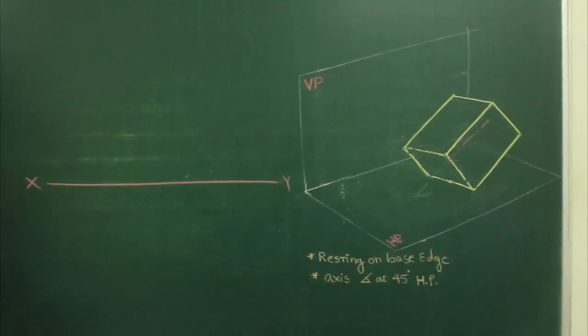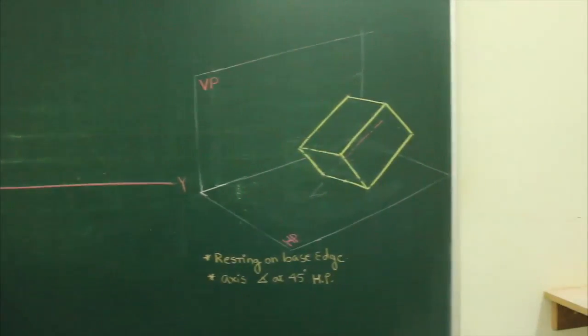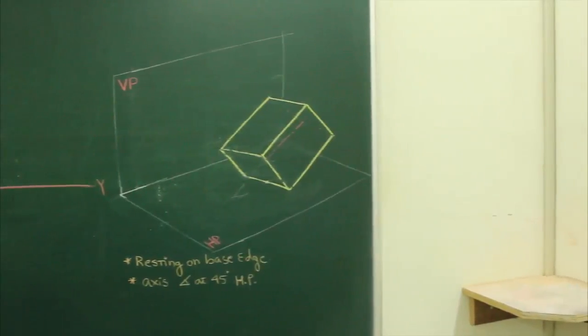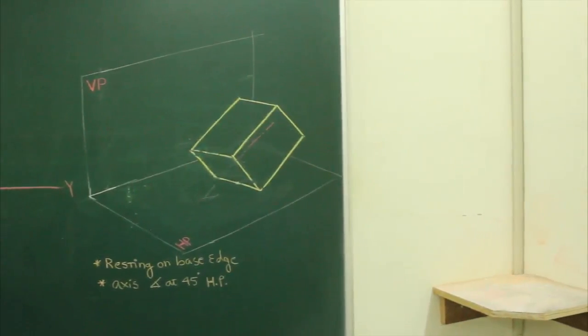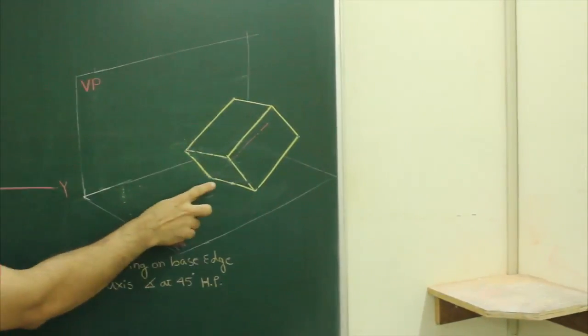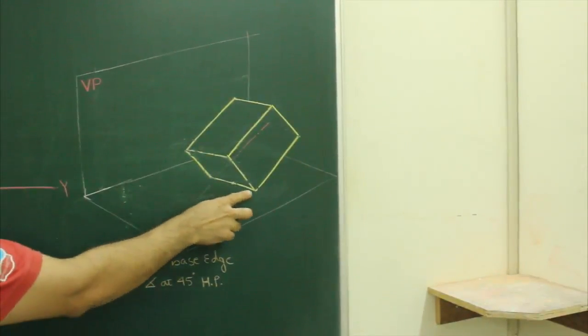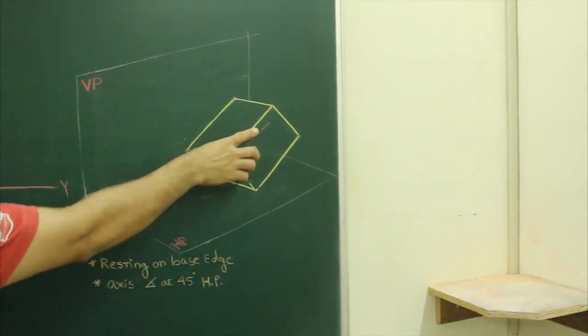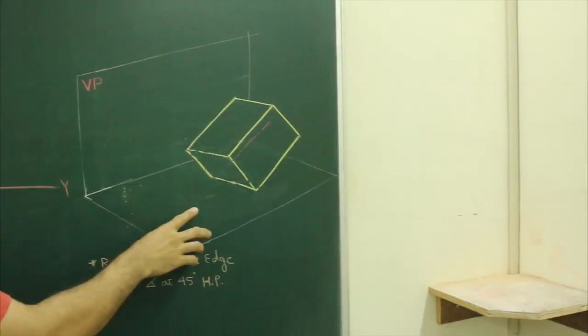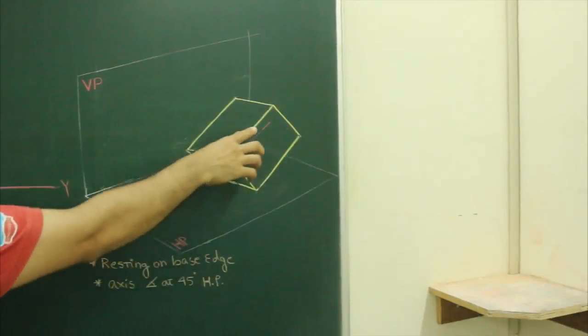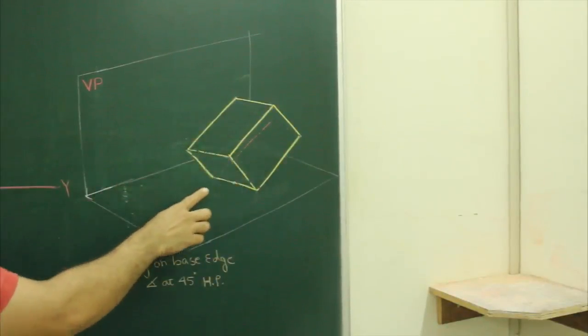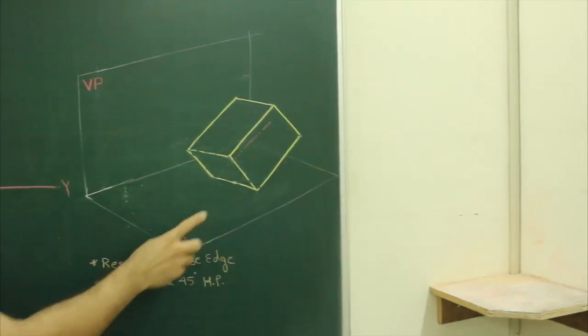In this problem, a square prism is resting on its base edge on HP, and the axis is inclined at 45 degrees to HP.